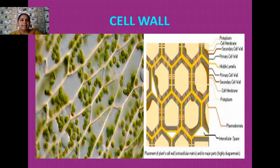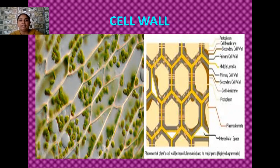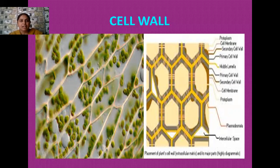When the plant cell is in its younger state, the cell wall that first originates in the plant cell is known as the primary cell wall. This primary cell wall is short-lived and stays in the cell for some time. Later it is replaced by another new cell wall that grows towards the plasma membrane after the primary cell wall, and this is known as the secondary cell wall.